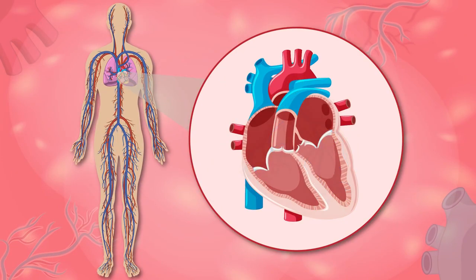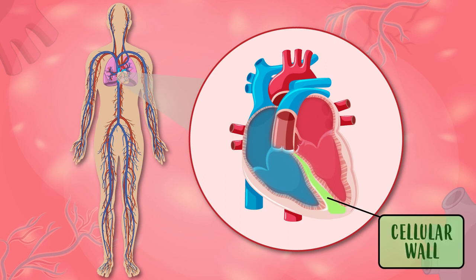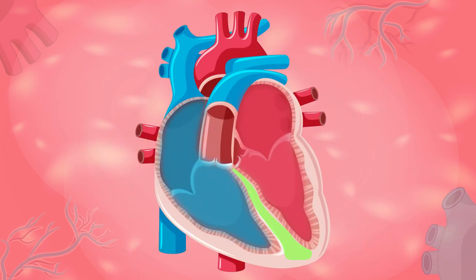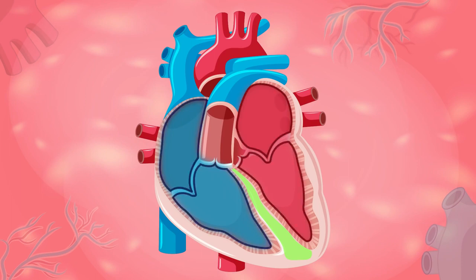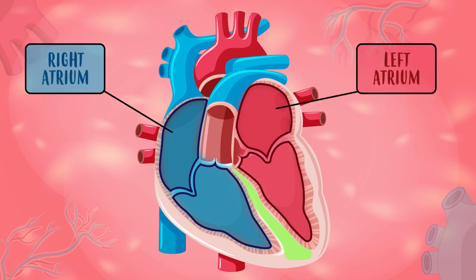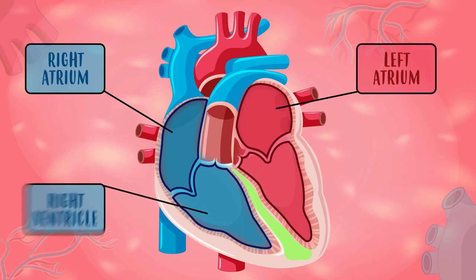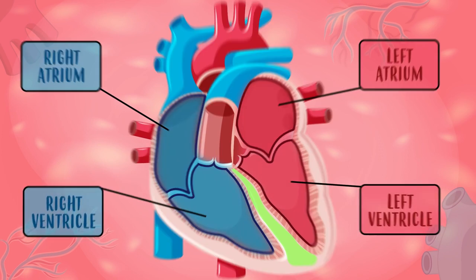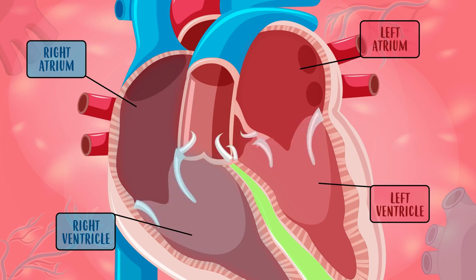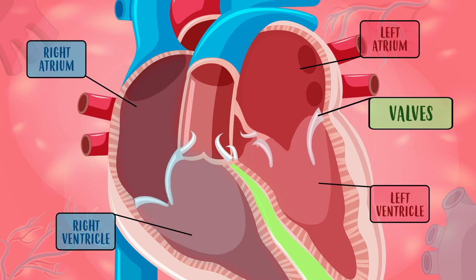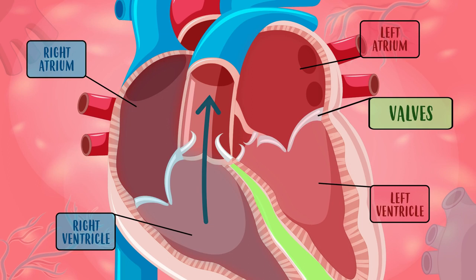The heart is divided into two parts: the right part and the left part, separated by a cellular wall, so they are not connected internally. Each one of these parts has two chambers or cavities. The upper cavities are called right and left atrium, and the lower cavities are called right and left ventricle. The heart also has four kinds of doors, which are called valves. These valves open to let blood in, and they close so this blood can't go back.